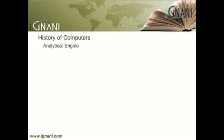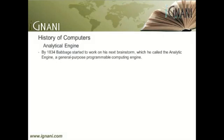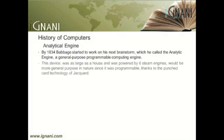Analytical Engine: Babbage was not discouraged by the outcome of his Difference Engine project. During this project he understood that a much more general design was possible. By 1834, he started to work on his next brainstorm, which he called the Analytical Engine — a general-purpose programmable computing engine. The input, programs and data, was to be provided to the machine via punched cards. For output, the machine would have a printer, a curve plotter, and a bell. The machine would also be able to punch numbers onto cards to be read in later. It employed ordinary base 10 fixed-point arithmetic. This device was as large as a house and was powered by six steam engines. Thanks to the punched card technology, it would be more general purpose in nature, since it was programmable.